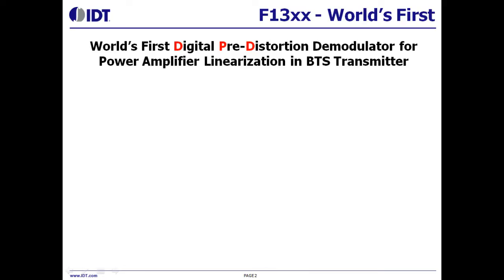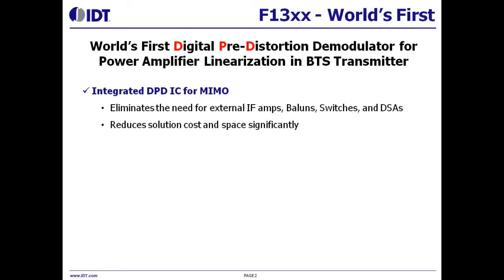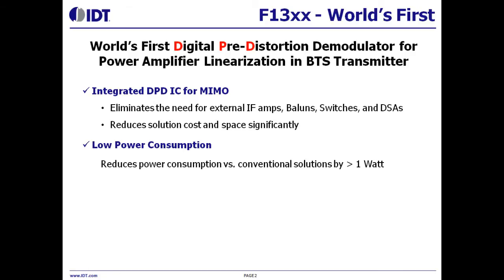The IDT-F3030 is the world's first digital predistortion demodulator for PA Amplifier Linearization in a Base Station Transmitter. Key features include an integrated DPD IC for MIMO that eliminates the need for external I/Q amps, baluns, switches, and data-step attenuators, reducing solution cost and space. Low power consumption reduces power versus conventional solutions by 1 watt.